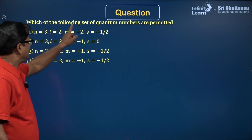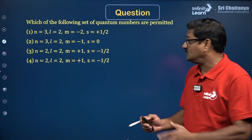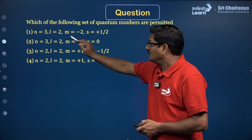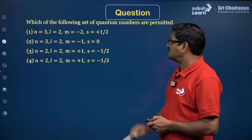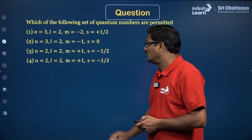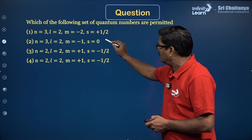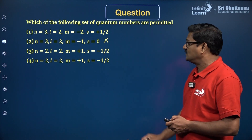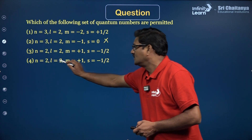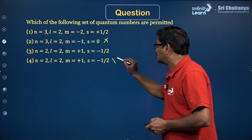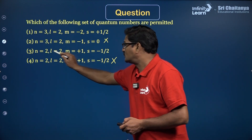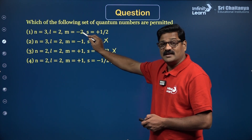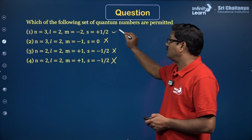Question 2: Which of the following sets of quantum numbers are permitted? Option A: N=3, L=2, M=−2, S=+1/2 — this is valid. Option B: N=3, L=2, M=−1, S=0 — S cannot be 0, not possible. Option C: N=2, L=2, M=+1, S=−1 — L cannot equal N, not possible. Option D: same issue. Therefore, the answer is option 1 (Option A).